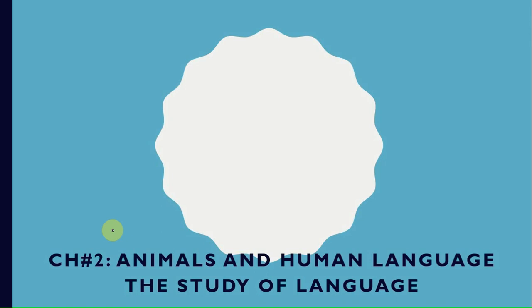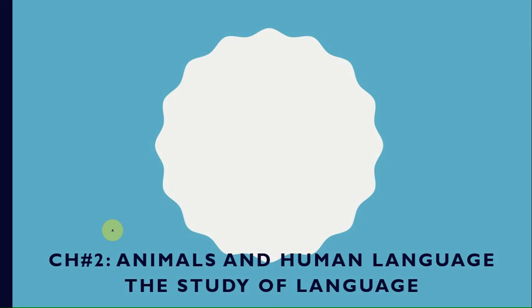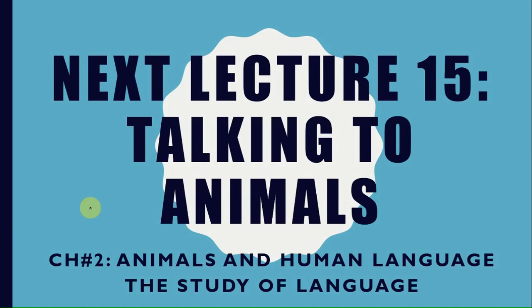So this is all about today's lecture, where we discussed duality — that human language exists at two levels: at one level we produce sounds, and at another level we produce several combinations of those sounds to create different meanings. In the next lecture, we are going to discuss talking to animals. Throughout Chapter 2, we have discussed several properties of human language and compared them with animals. The question of whether animals can learn language is what we will explore in upcoming lectures. I hope you understood today's lecture. If you notice any mistakes, please point them out in the comments. Don't forget to give your feedback. Jazakallah khairan, and thank you.